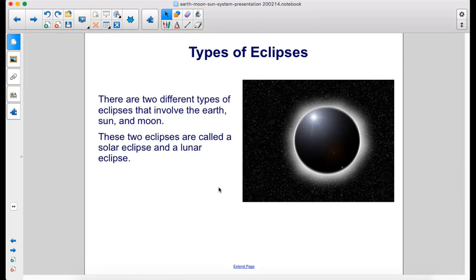There are two different types of eclipses that involve the earth, sun and moon. These two eclipses are called a solar eclipse and a lunar eclipse.